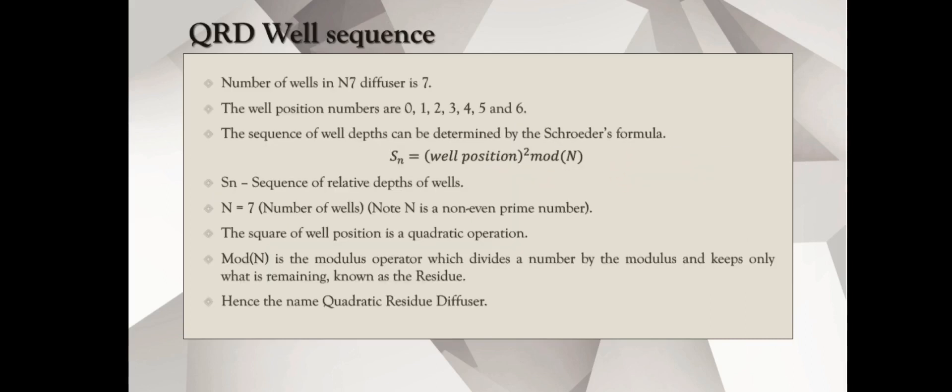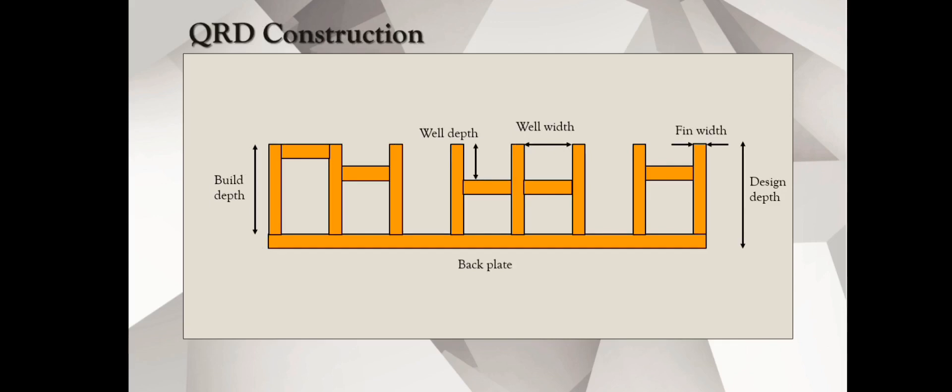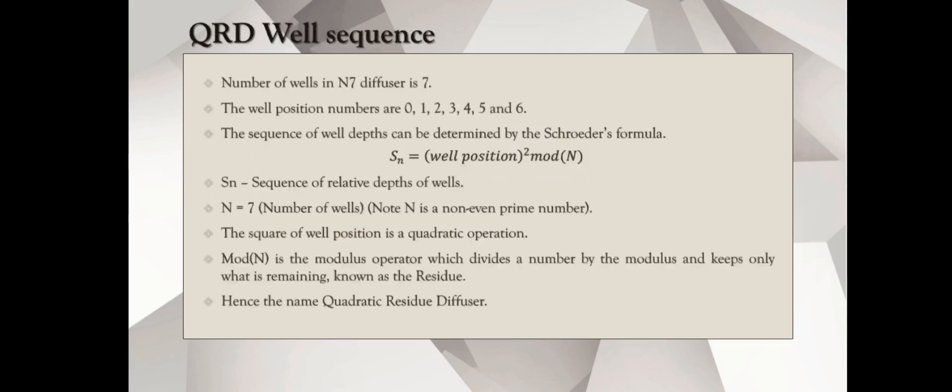For N7 diffuser, we have a sequence in order to get this pattern. The well position numbers are 0 to 6, and in order to determine the sequence, we've got to follow the Schroeder formula, which is well position squared times modulo of N, and Sn is a sequence of relative depths of wells. We know N is 7 because we're talking about N7 diffuser. First, we square the well position, and when you say square, it's a quadratic operation, and then we take the modulo of that squared number. What is modulo operator? The modulo operator divides the number by the modulus and keeps only what is remaining. It keeps only the remainder, also known as a residue. That's how the name derives quadratic residue diffuser.